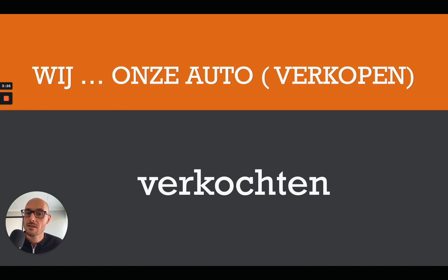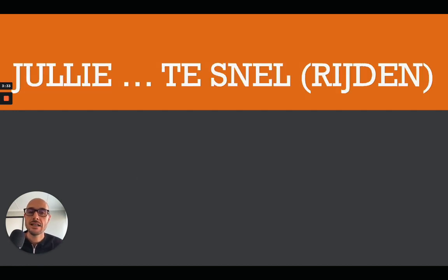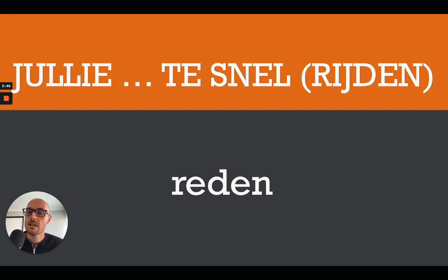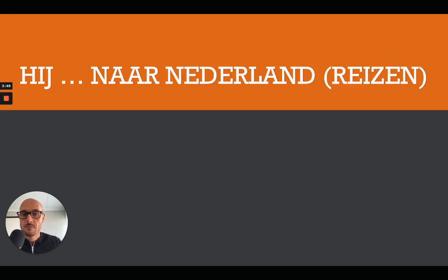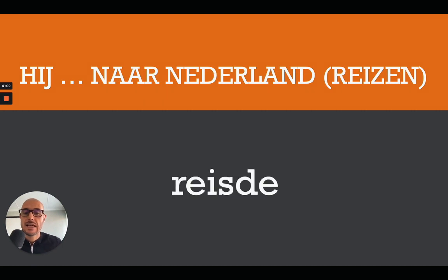Most of the verbs in this exercise are irregular, with some regular ones. Next: jullie [blank] te snel, and the verb is rijden — you drove too fast. The correct answer is jullie reden te snel. Then: hij [blank] naar Nederland, and the verb is reizen — to travel. The correct answer is hij reisde, where the z turns into an s.